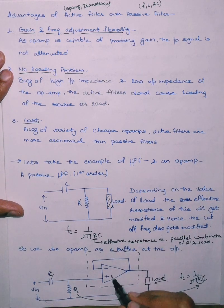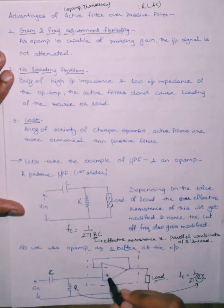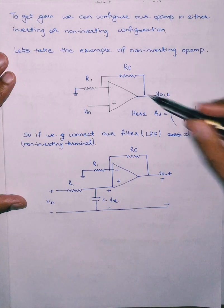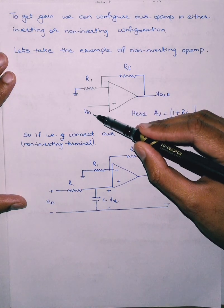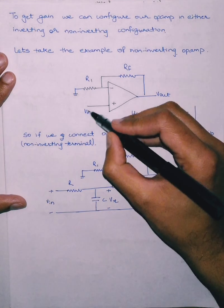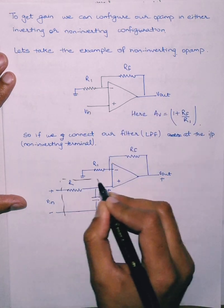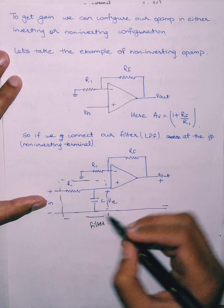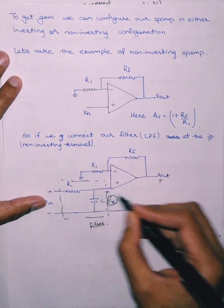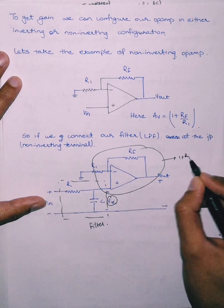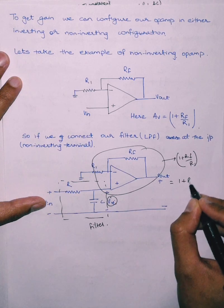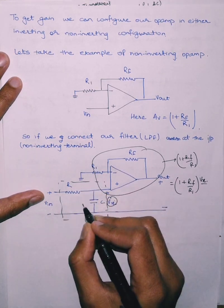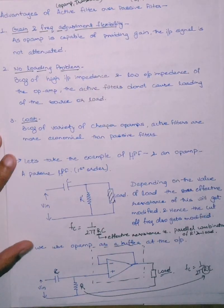To also provide gain, we can configure the op-amp in a non-inverting configuration. In the non-inverting op-amp, the input is applied at the non-inverting terminal and the gain is 1 + Rf/R1. When the input passes through a filter — in this case an RC low pass filter circuit — the output Vx is amplified by the op-amp. So Vout = (1 + Rf/R1) × Vx, where Vx is the filtered output of the RC low pass filter.